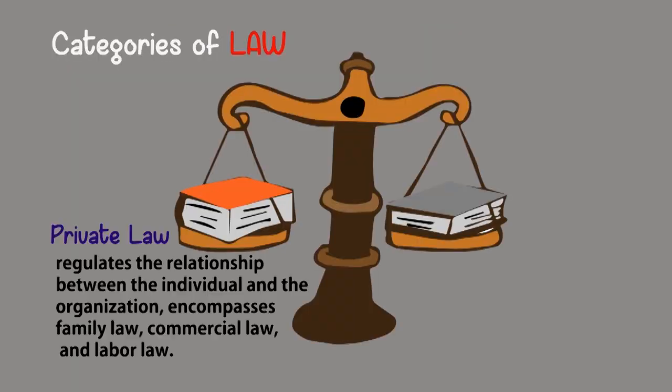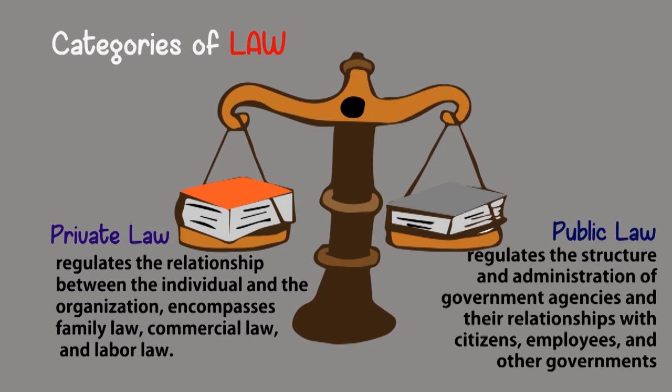Two categories of law are private law and public law. Private law regulates the relationship between the individual and the organization, and encompasses family law, commercial law, and labor law. Public law regulates the structure and administration of government agencies and their relationships with citizens, employees, and other governments.